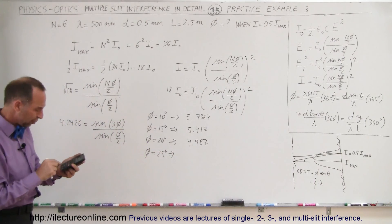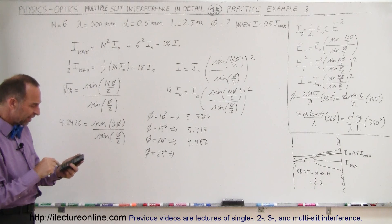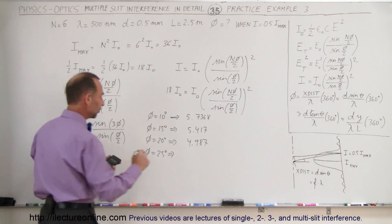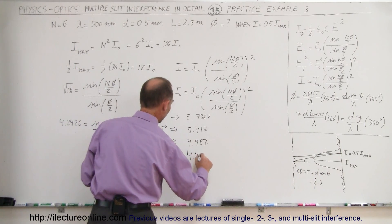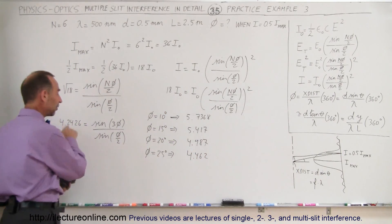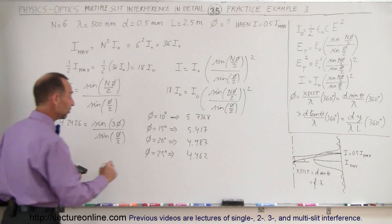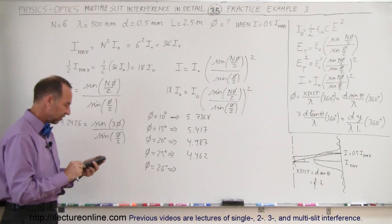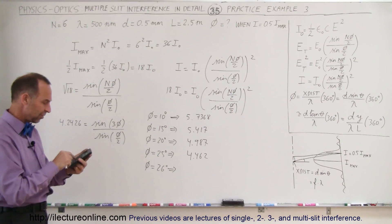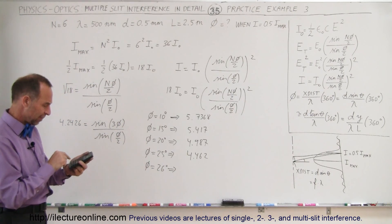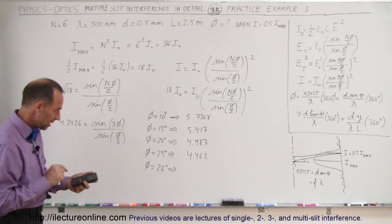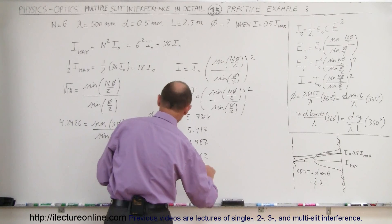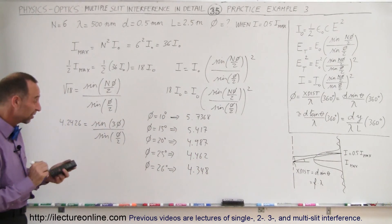Let's try 25 degrees. So 3 times 25 is 75, so let's take sine of 75 divided by sine of 12.5, and I get 4.462. Let's try 26 degrees, so sine of 78 divided by sine of 13, and I get 4.348, almost there.